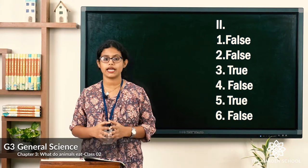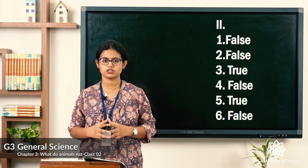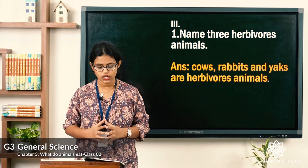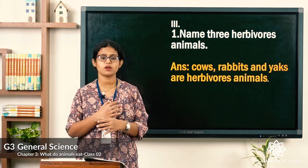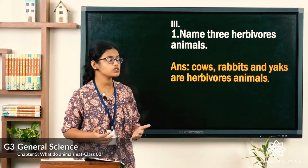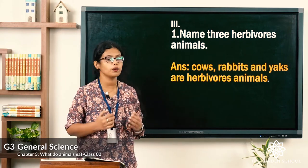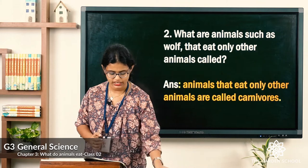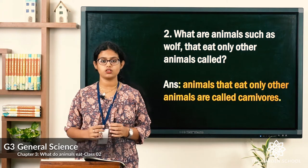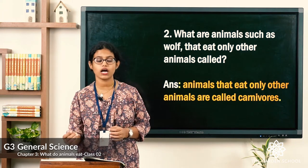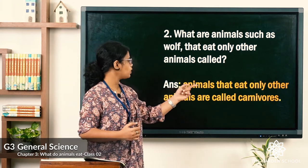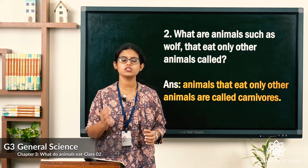Moving on to the third exercise: answer the following questions. First, name three herbivorous animals. There are many examples — cows, rabbits, and yaks are herbivorous animals. Second, what are animals such as wolf that eat only other animals called? We call them carnivorous — animals that eat only other animals are called carnivorous animals.